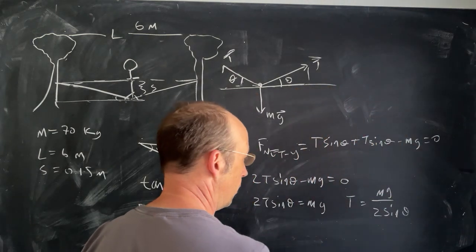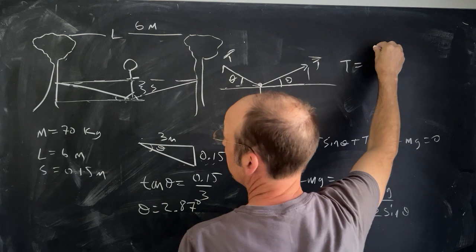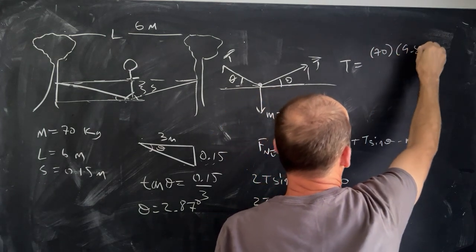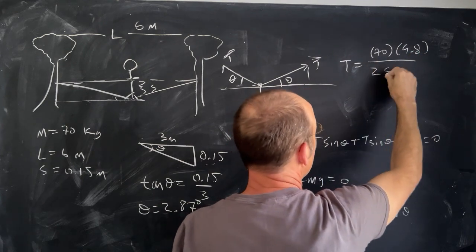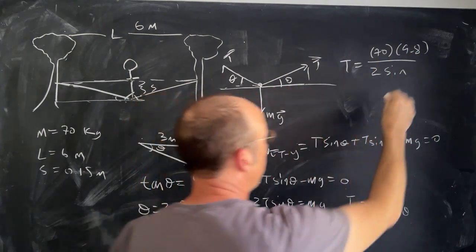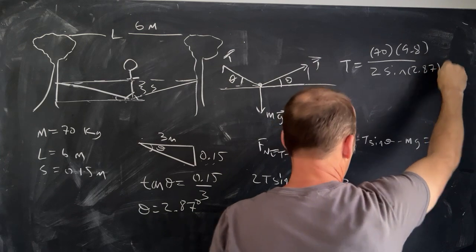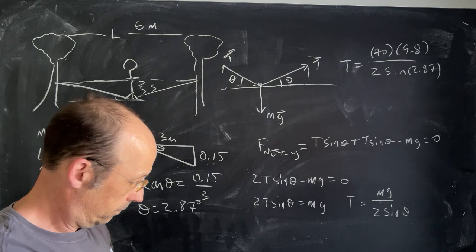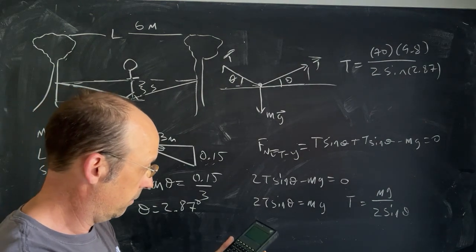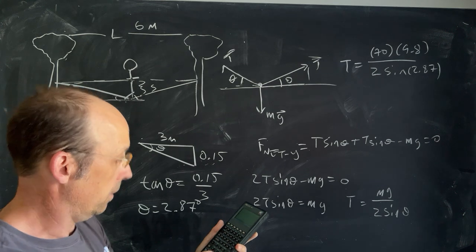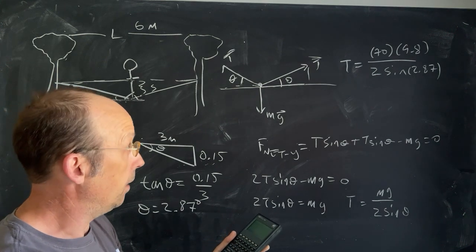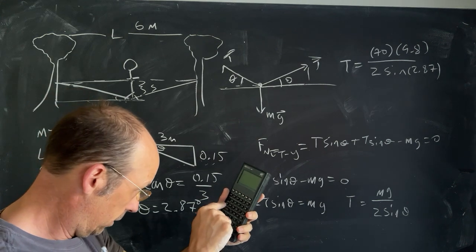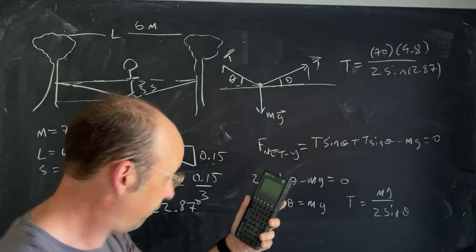Plugging in the values: T equals 70 times 9.8 divided by 2 times sine of 2.87 degrees, and I get approximately 6850 Newtons.